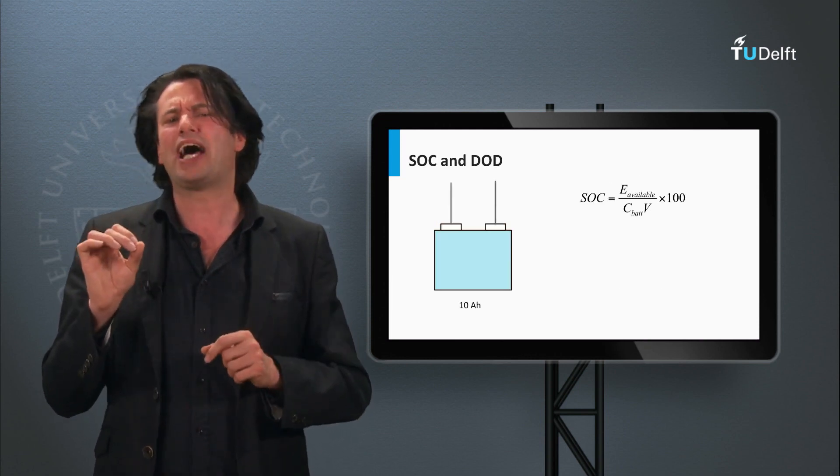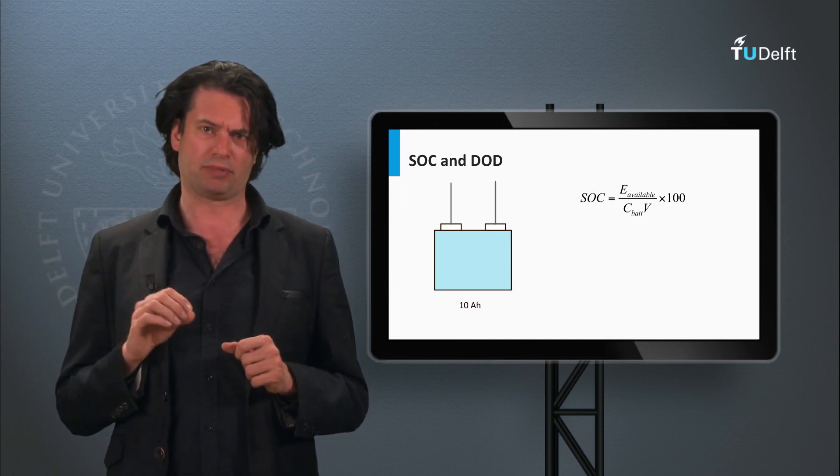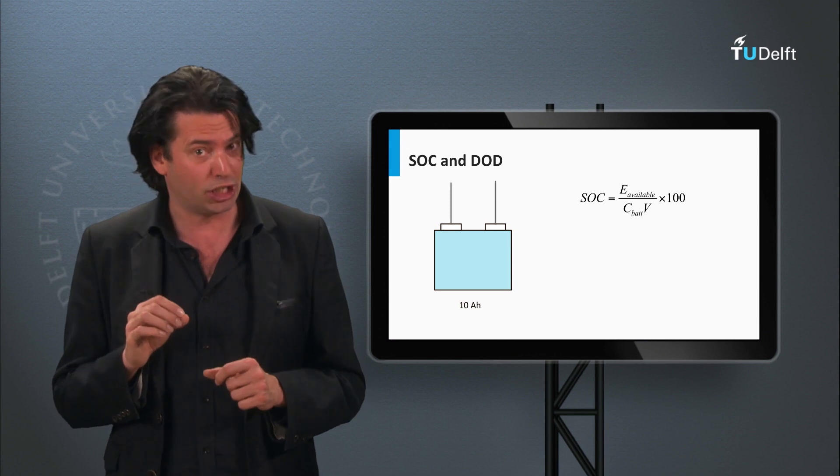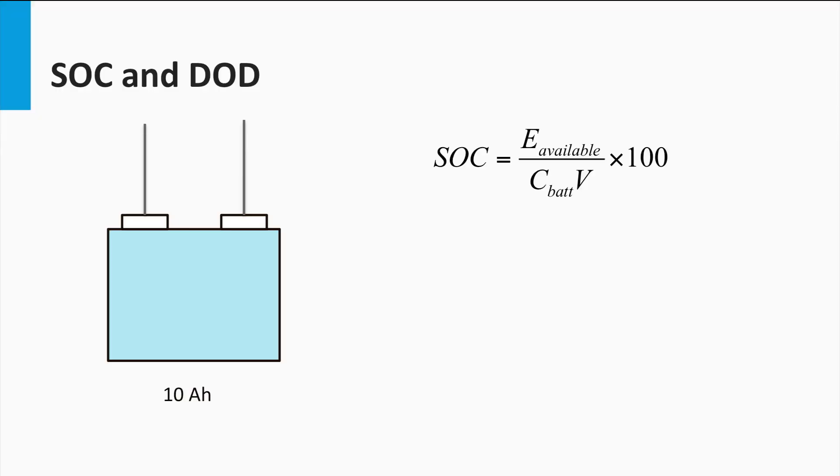Now let's look at another important battery parameter, the state of charge or the SOC. This is defined as the percentage of the battery capacity available for discharge. This 10Ah rated battery that has been drained by 2Ah is said to have a state of charge of 80%.